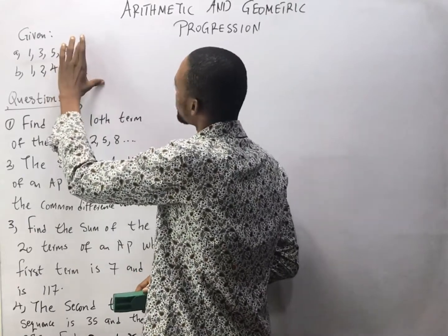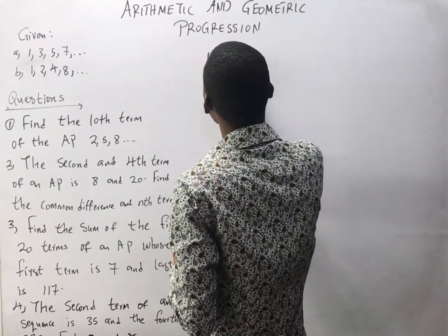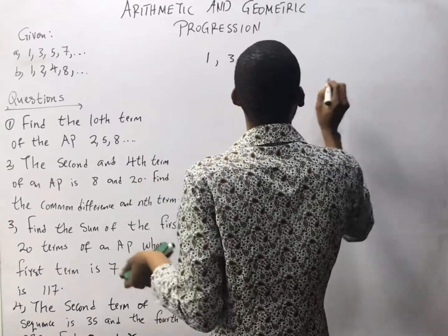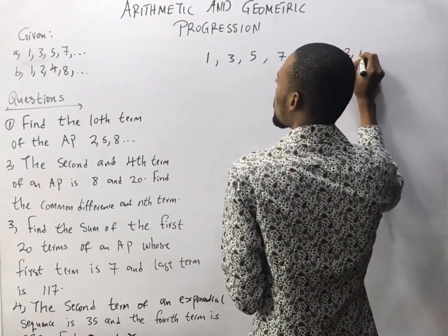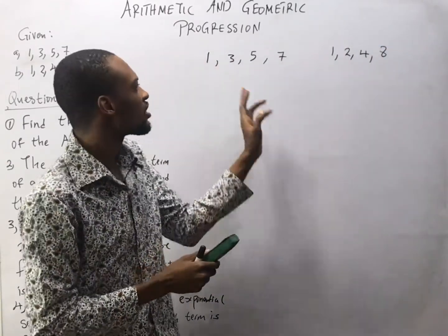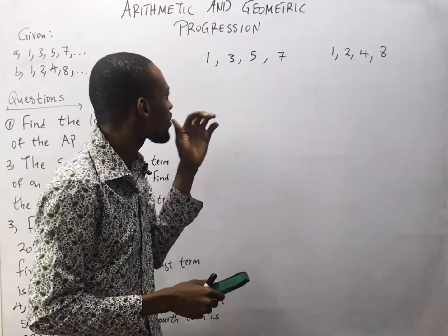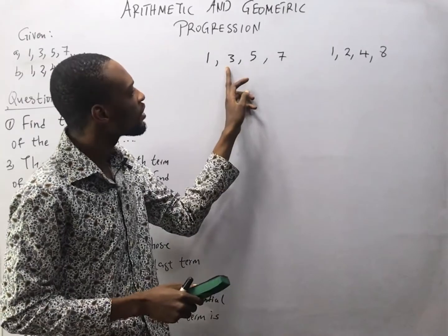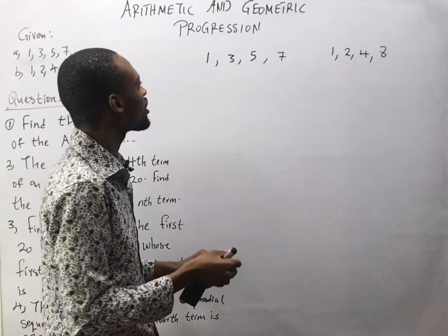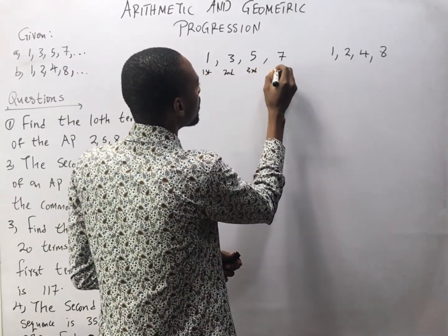Given these two sequences, you will see that for A, this is 1, 3, 5, and 7. And for B, this is 1, 2, 4, and 8. Remember, we said that a sequence differs or terms are related to each other by a defined rule. Here we have 1, 3, 5, 7. Now, what will be the next? Let this be the first, second, third, and fourth term.